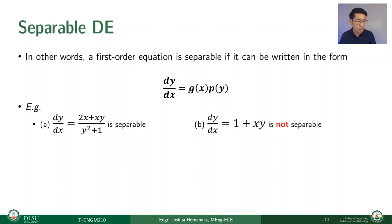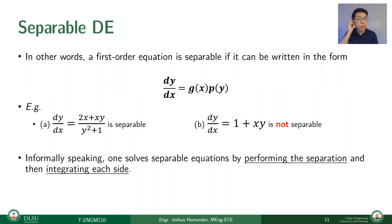A non-separable case exists when x and y appear in a polynomial that cannot be factored apart — no matter what we do, we cannot put x with dx and y with dy separately. In that case, we need another technique. Informally speaking, one solves separable equations by performing the separation and then integrating each side. Two parts: first separate, then integrate.